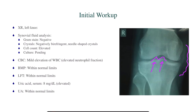Our synovial fluid analysis showed a negative gram stain. Crystals: negatively birefringent needle-shaped crystals — boom, diagnosis. Elevated cell count, and culture is pending. CCS will never give you the results of culture because they take several days. CBC shows mild leukocytosis. BMP and liver function tests are within normal limits. Uric acid is elevated, and the urinalysis is within normal limits.